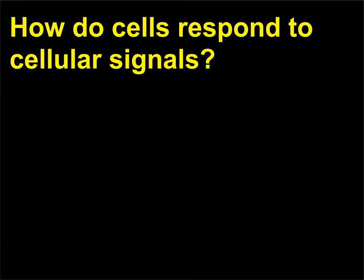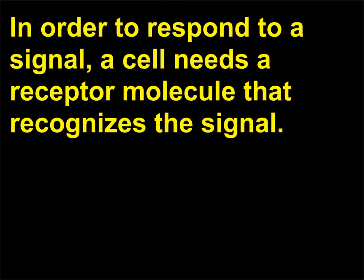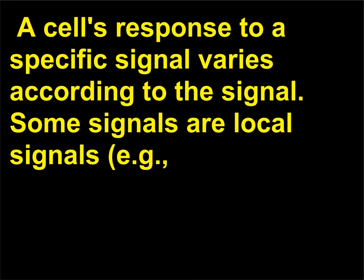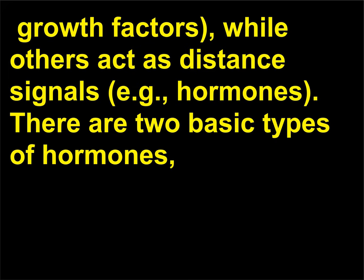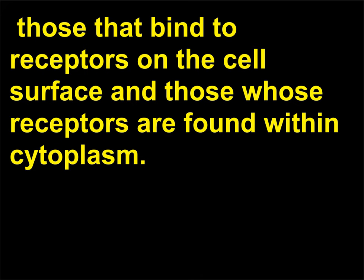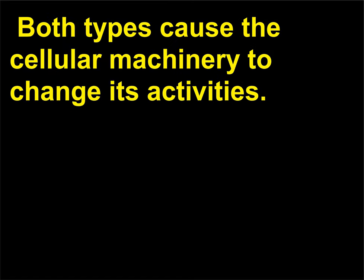How do cells respond to cellular signals? In order to respond to a signal, a cell needs a receptor molecule that recognizes the signal. A cell's response to a specific signal varies according to the signal. Some signals are local signals, such as growth factors, while others act as distance signals, such as hormones. There are two basic types of hormones: those that bind to receptors on the cell surface and those whose receptors are found within the cytoplasm. Both types cause the cellular machinery to change its activities.